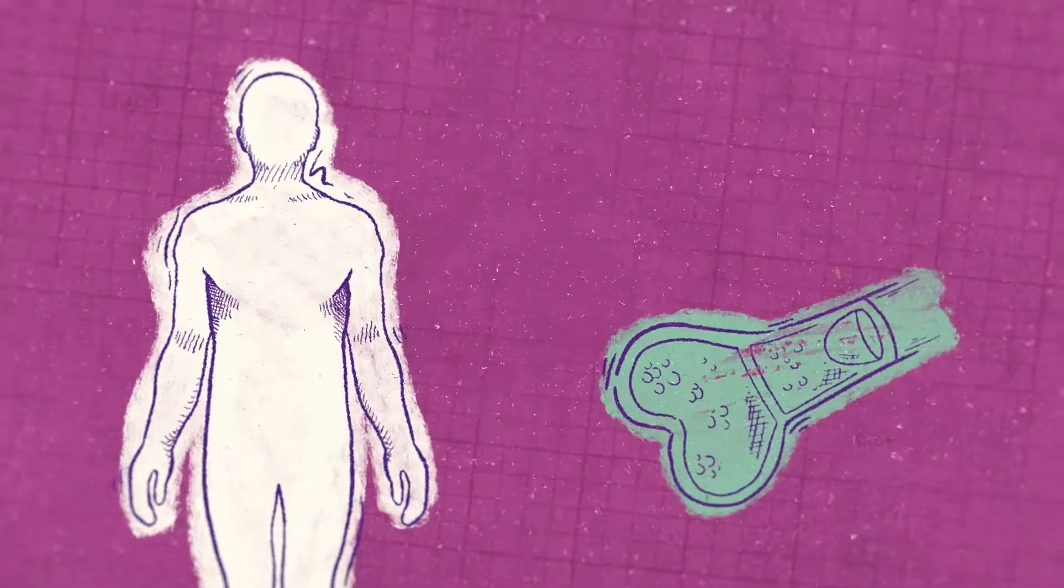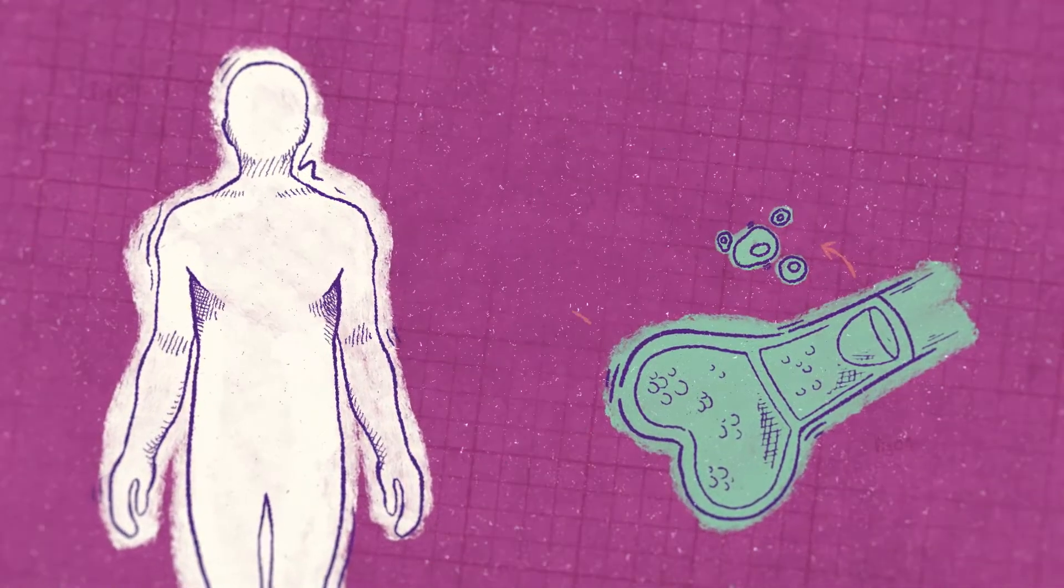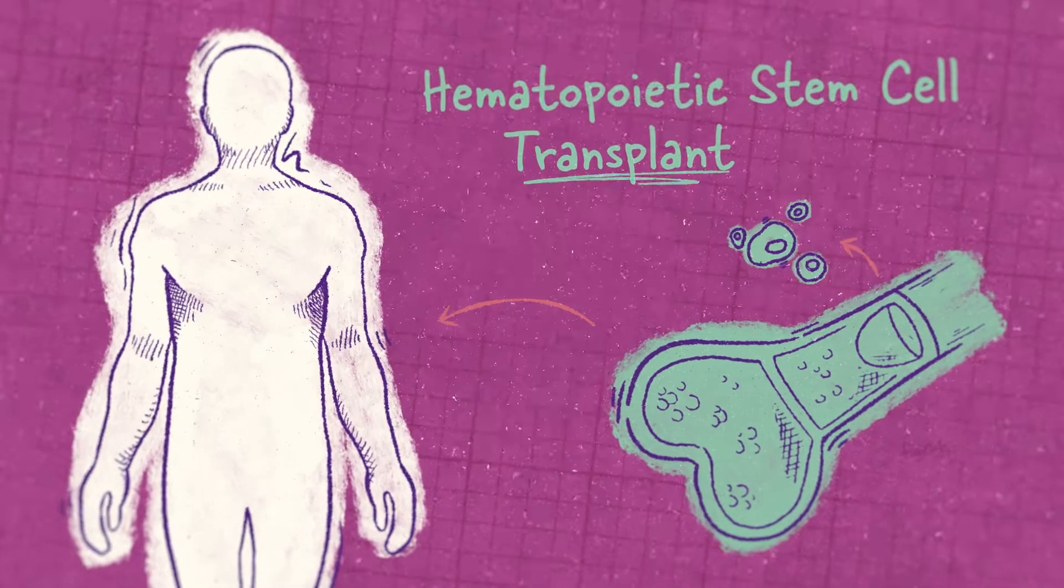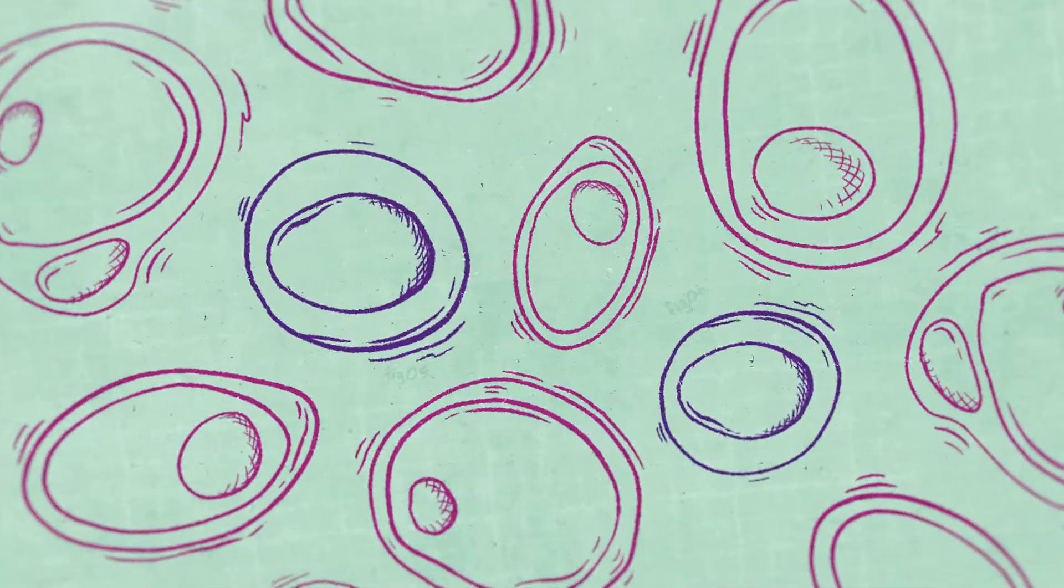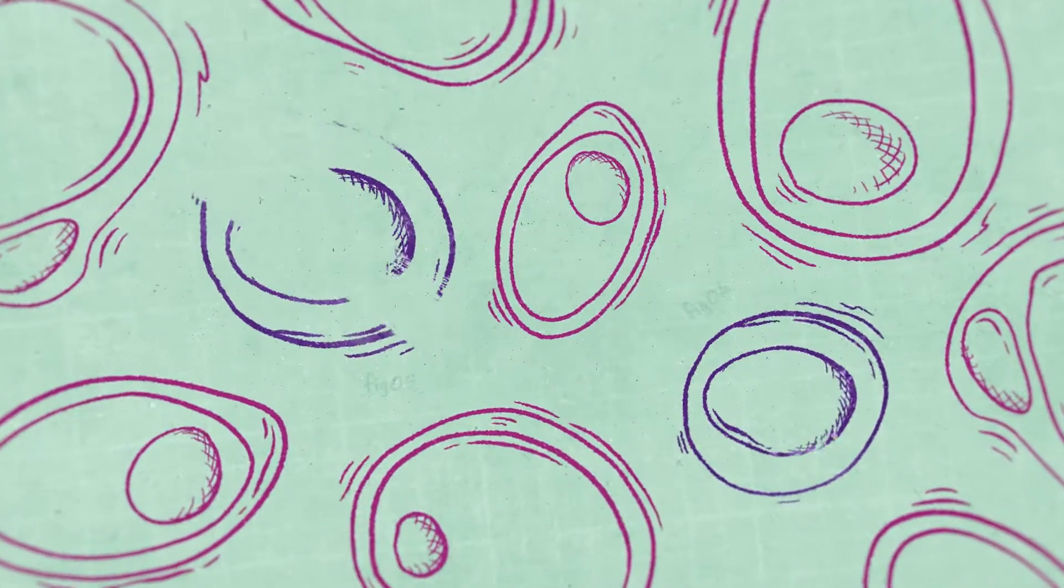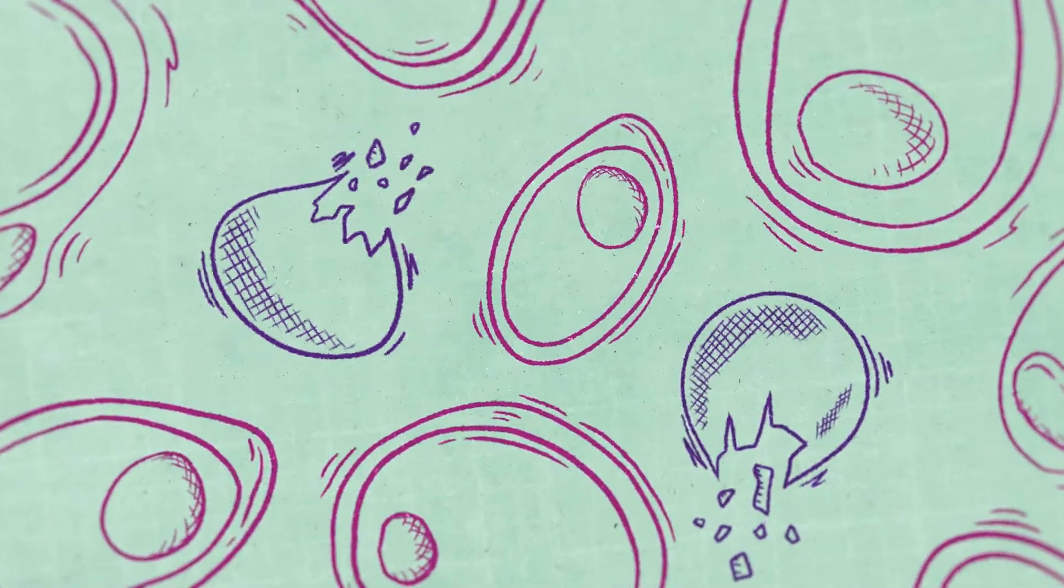These new HSCs, or modified cells, can be introduced to a person through a hematopoietic stem cell transplant. For the transplant to be successful, HSCs already in the body must be removed to make room for the new ones. This is done through a process called conditioning.